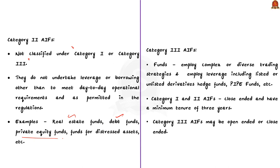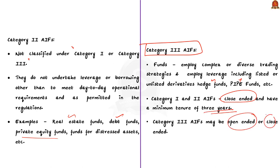Category 3 AIFs are funds which employ complex or diverse trading strategies and may employ leverages, including investments in listed or unlisted hedge funds, PIPE funds, etc. Category 1 and 2 are closed-ended funds with a minimum tenure of 3 years, whereas category 3 can be either open-ended or closed-ended funds.